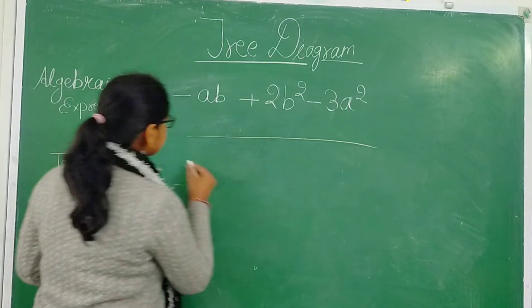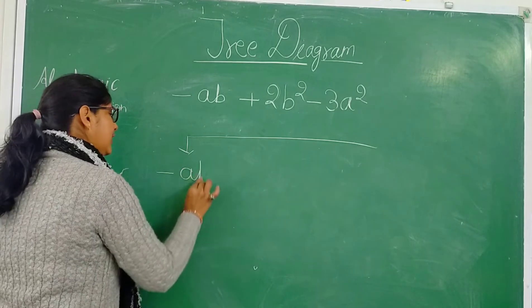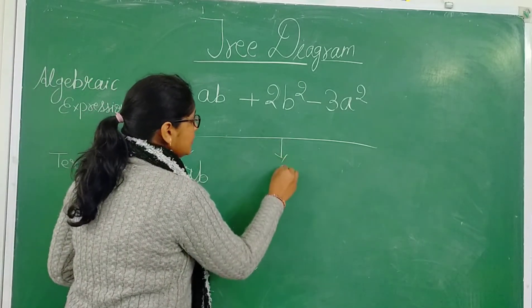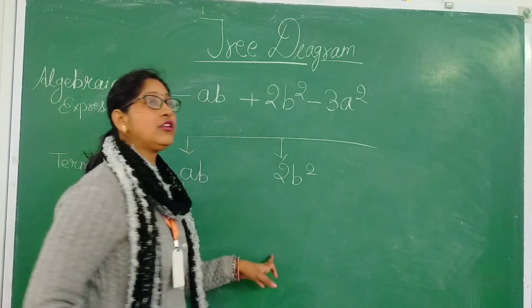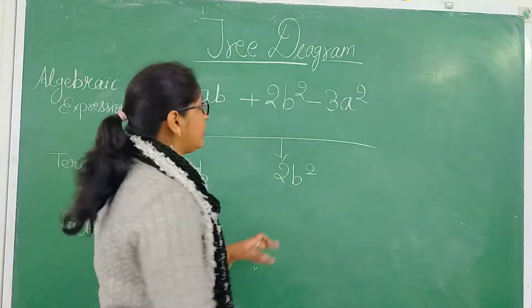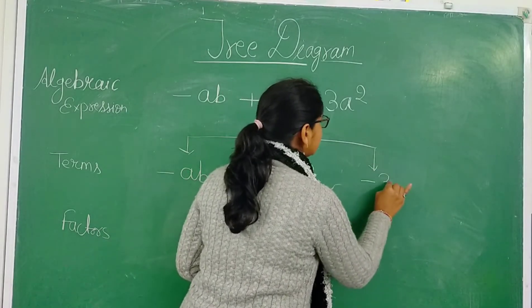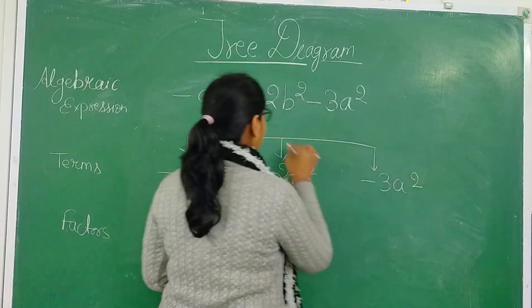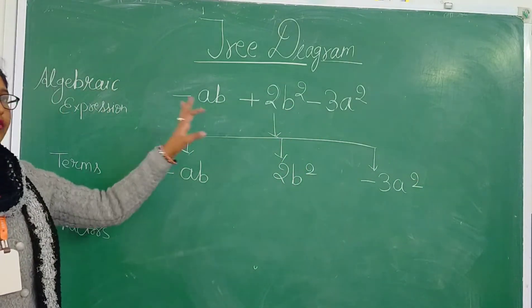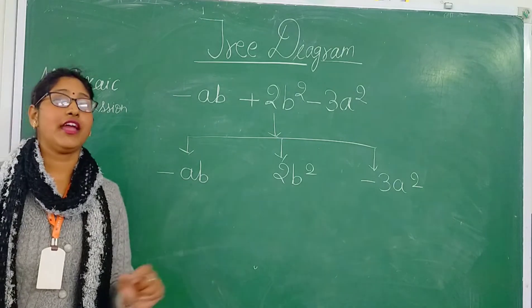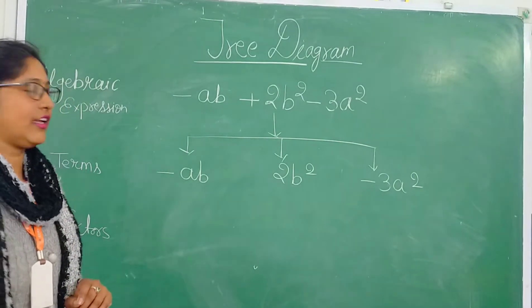So in this algebraic expression we have three terms. Our first term is minus ab, our second term is plus 2b², and our third term is minus 3a². There is no need to write the plus sign for the second term. These three are the terms of the algebraic expression, and now we represent their factors with the help of dotted lines.